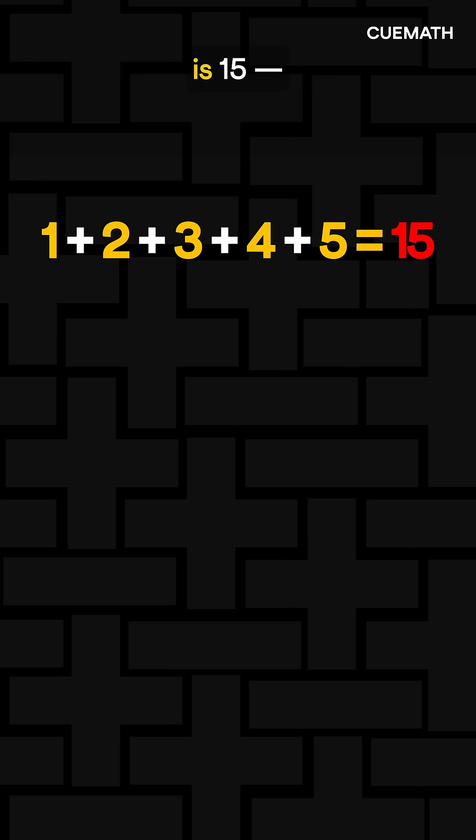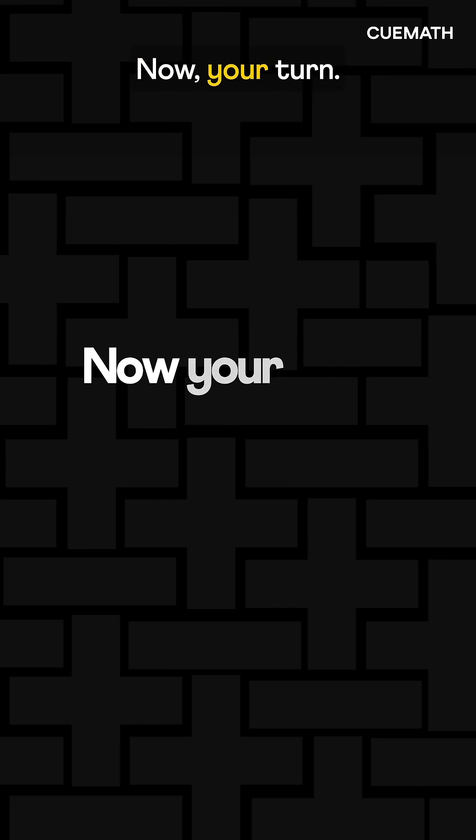For 1 to 5, the sum is 15, an odd number, so it can't be split equally. That's why it's impossible. Now your turn.